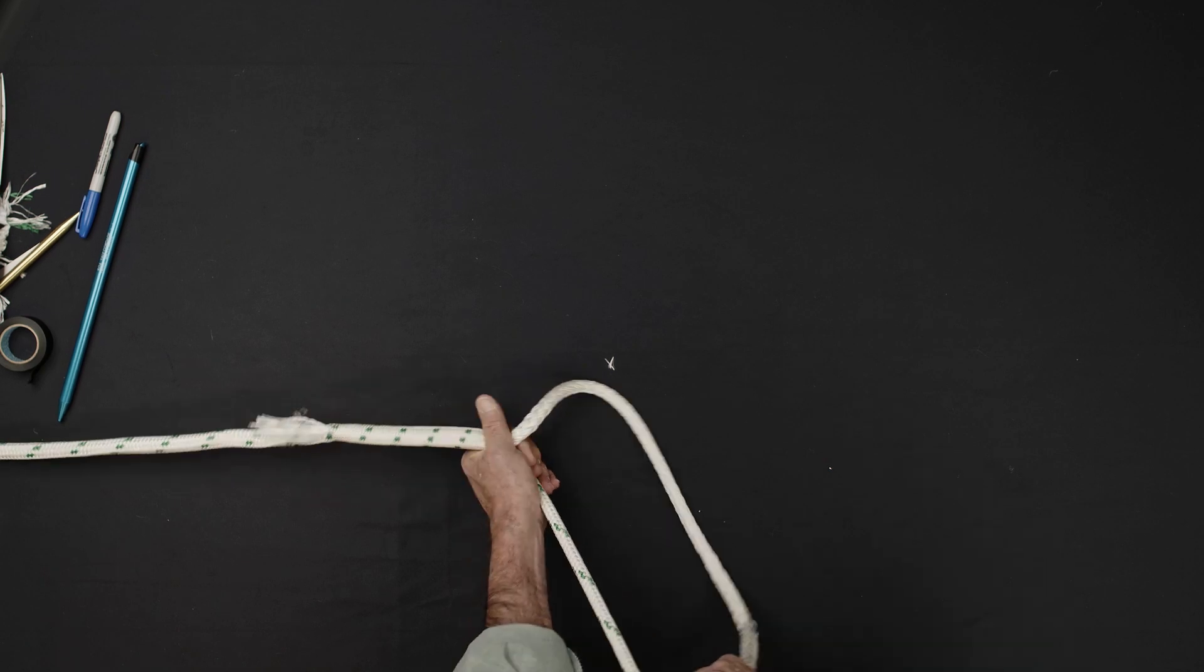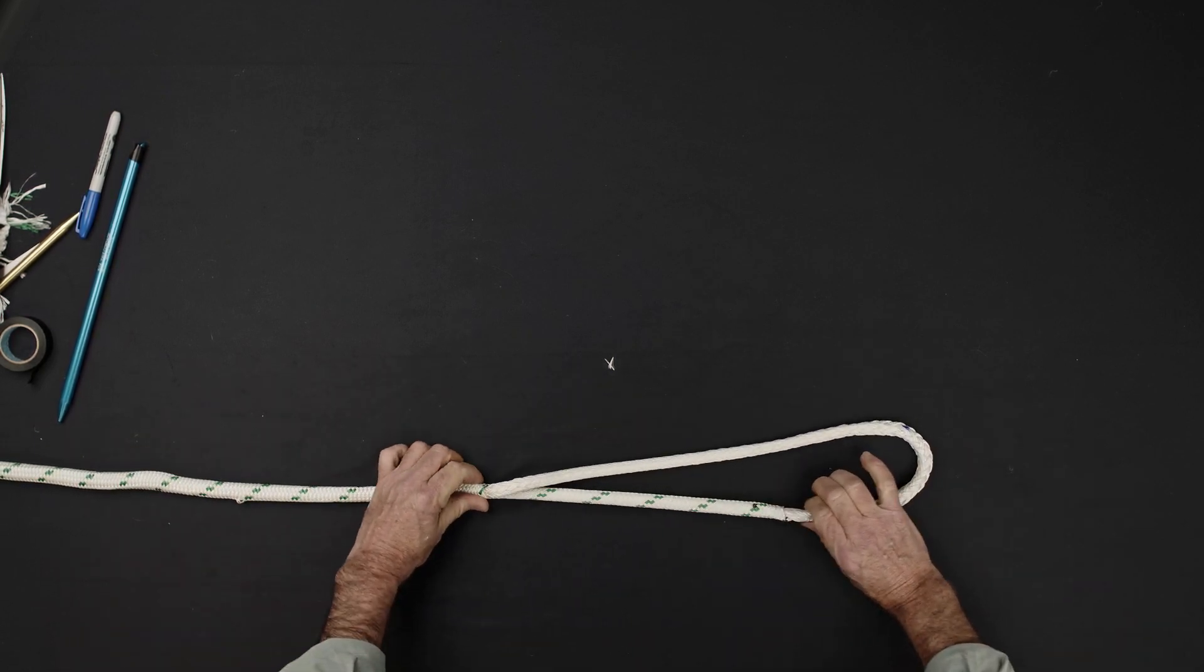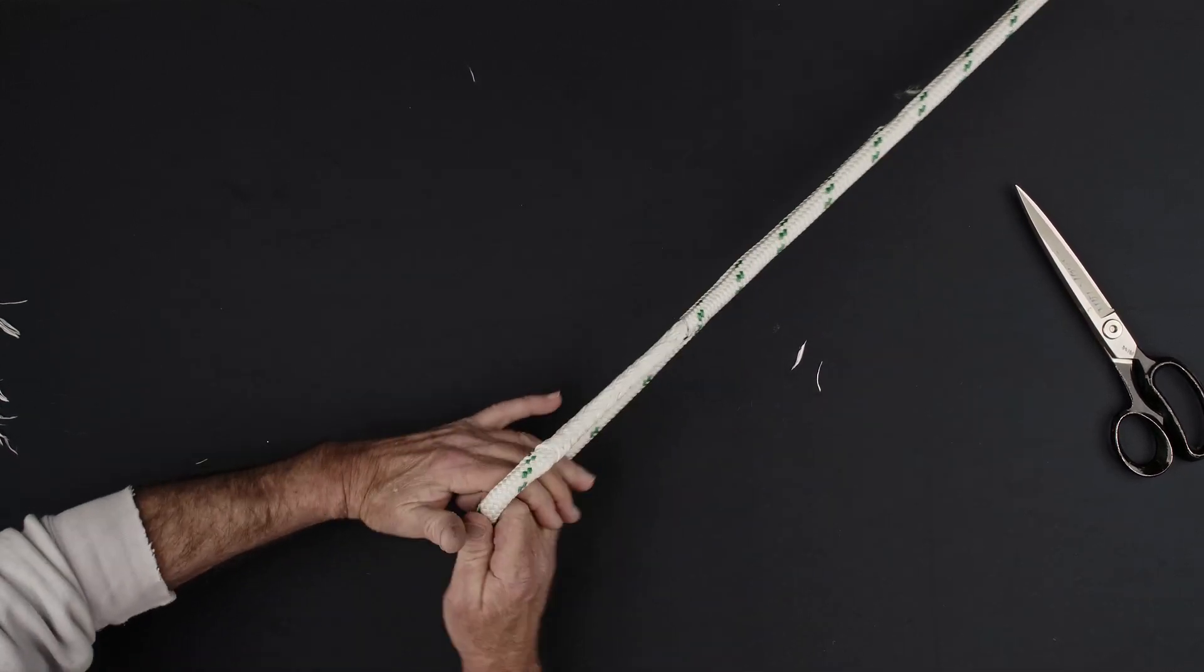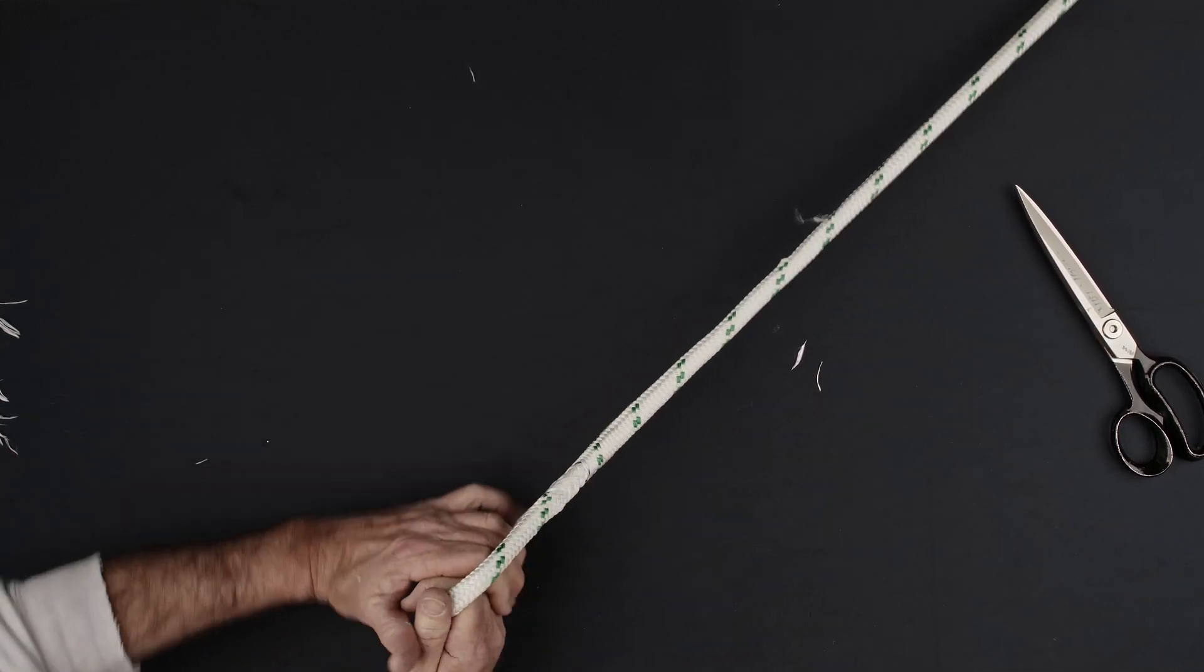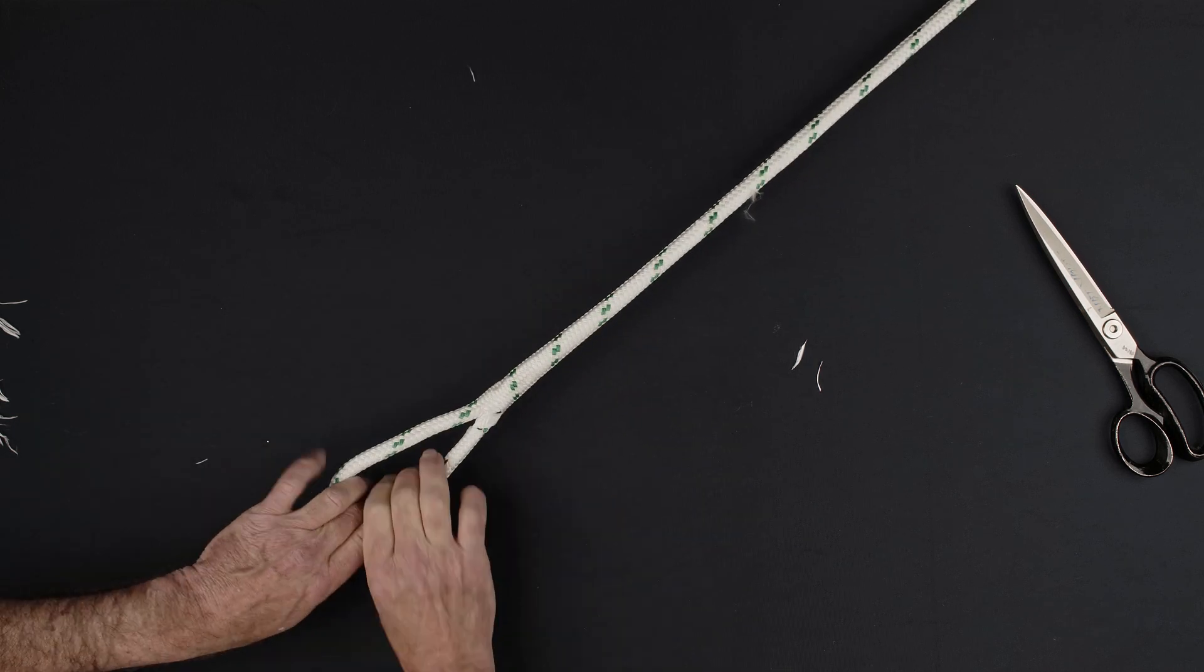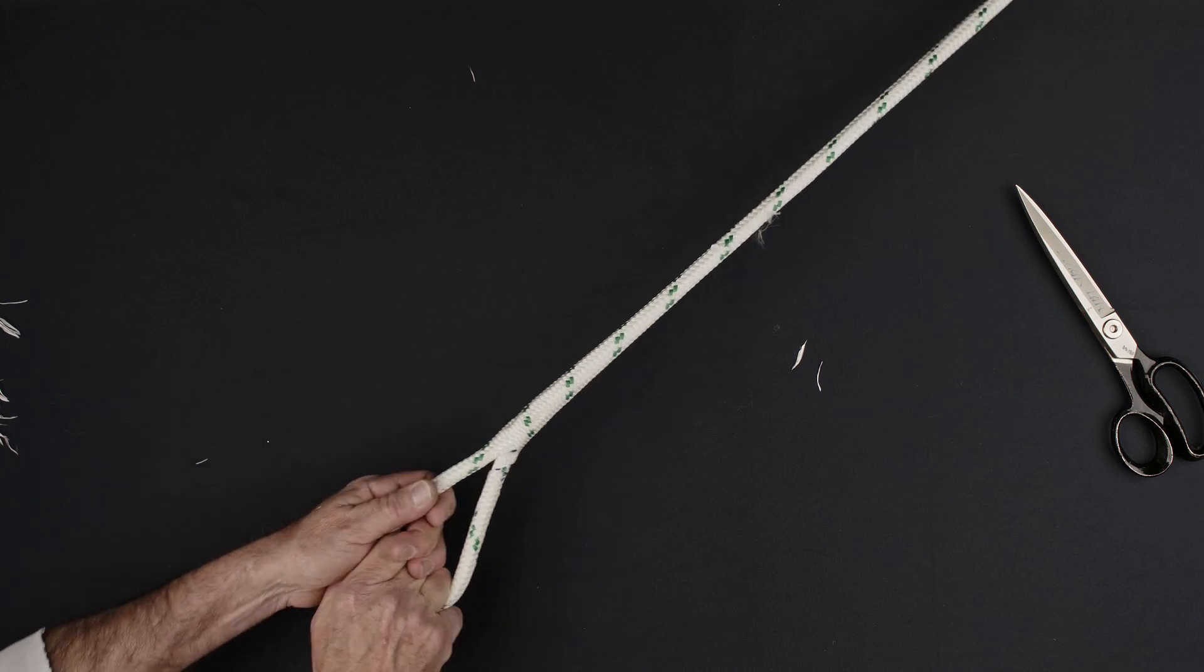Milk the excess sleeve slack back, pulling in the tail of the core. To complete the splice, while pulling against a secure fixture, rotate the top of the eye towards the exposed core. Milk any excess sleeve slack back towards the eye.